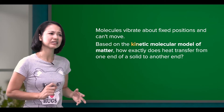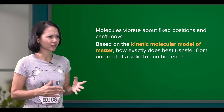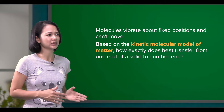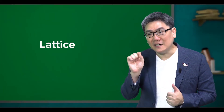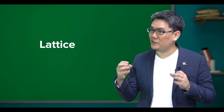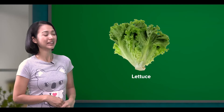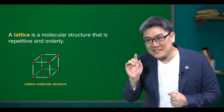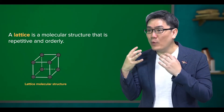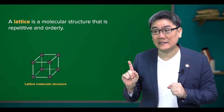So based on the kinetic molecular model of matter, how exactly does heat transfer from one end of a solid to another end? We actually have a term for the fixed and repetitive structure of the solid. A lattice. Lattice? Not the vegetable. A lattice is a molecular structure that is repetitive and orderly.